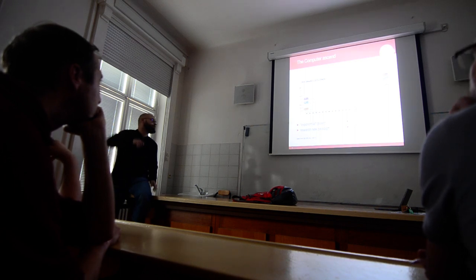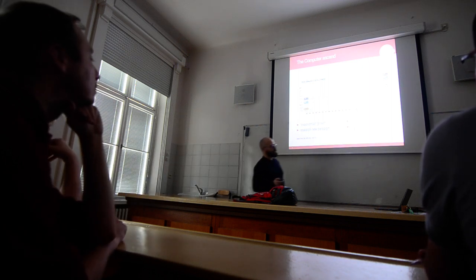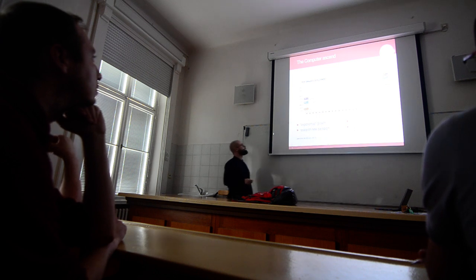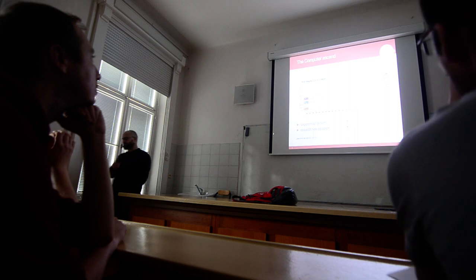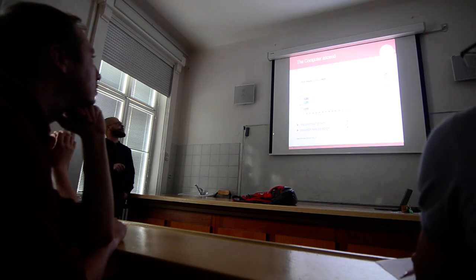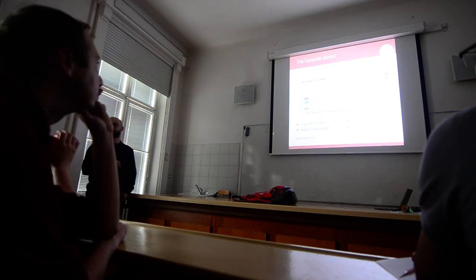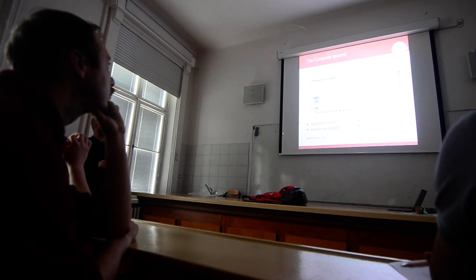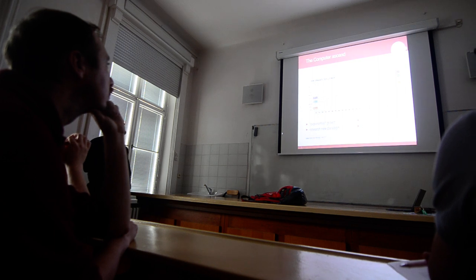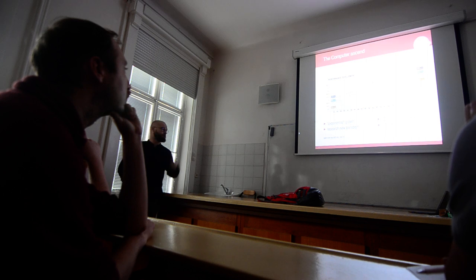The first one is computer power. Computer power grew up in an exponential fashion over time. This is the top 500 supercomputer list, it's a bit outdated but the concept is the same. Over time, this is the sum of the top 500 supercomputers, this is the top number one, and this is the last, the slowest computer. This is exponential scale, so this means that computer power is doubling every 18 months.